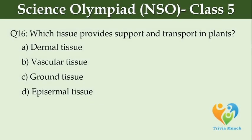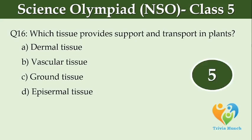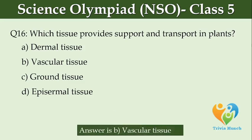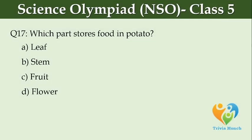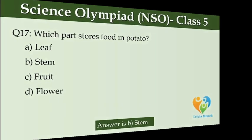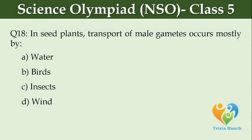Which tissue provides support and transport in plants? Option A: dermal tissue. Option B: vascular tissue. Option C: ground tissue. Which part stores food in potato? Option A: leaf. Option B: stem. Option C: fruit. Option D: flower. In seed plants, transport of male gametes occurs mostly by Option A: water. Option B: bird. Option C: insects. Option D: wind.